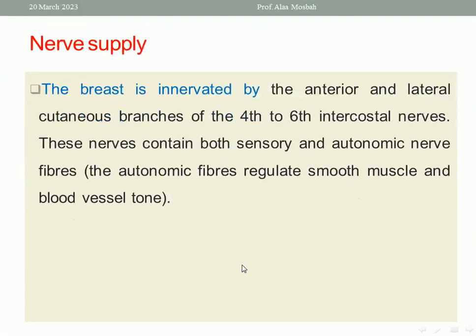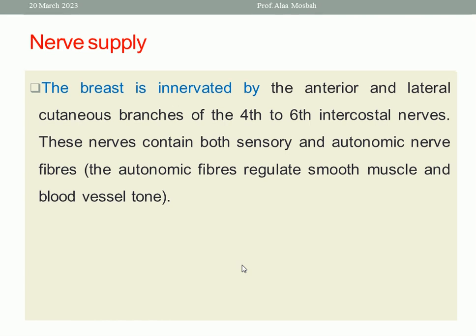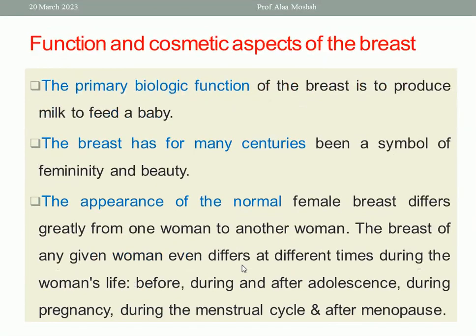What is the nerve supply to the breast? The breast is innervated by anterior and lateral cutaneous branches of the fourth to sixth intercostal nerves. These nerves contain sensory and autonomic nerve fibers. The autonomic fibers regulate smooth muscle and blood vessels. Contraction of the nipple is controlled by oxytocin and prolactin secreted from the pituitary gland.